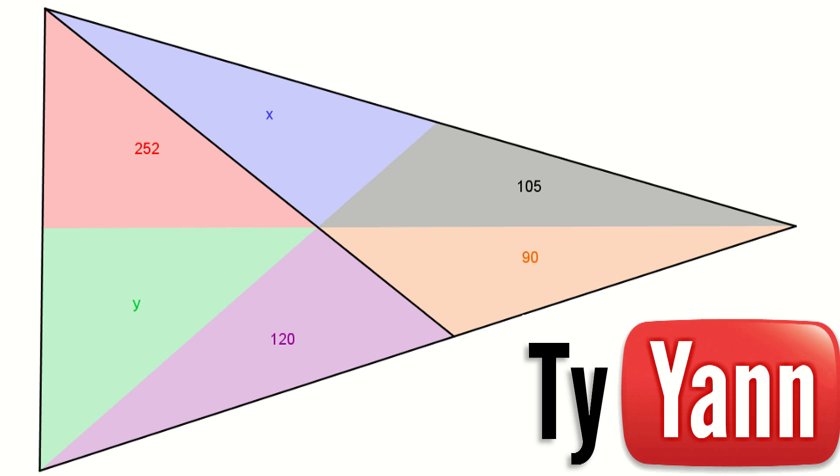Let's check those two triangles that are outlined in black. The left one has an area of 252 plus y plus 120, and the right one has an area of x plus 105 plus 90. But they have something in common.